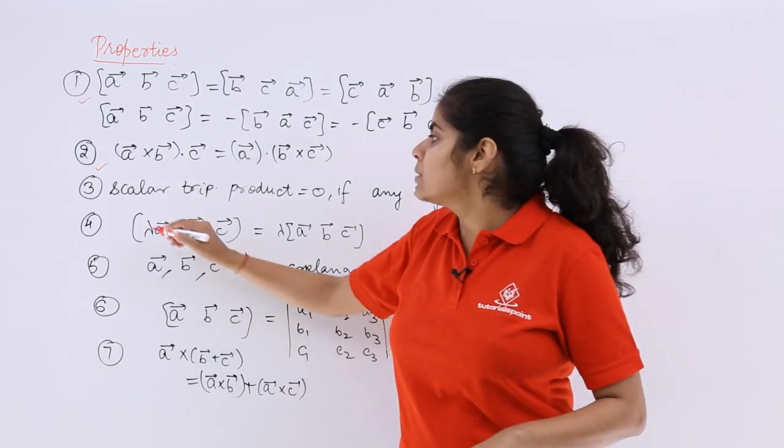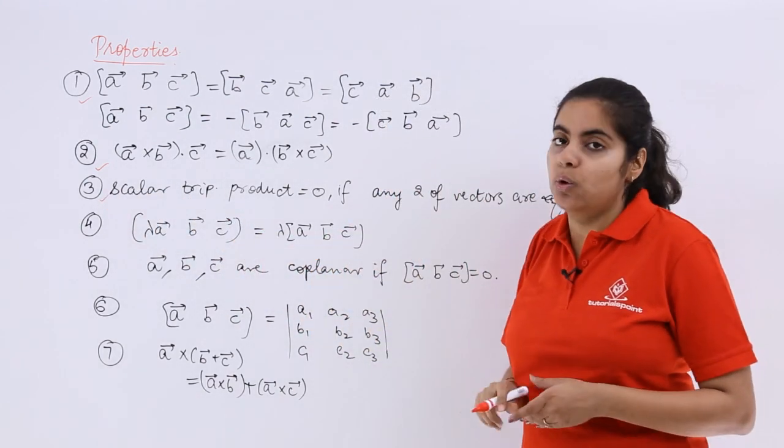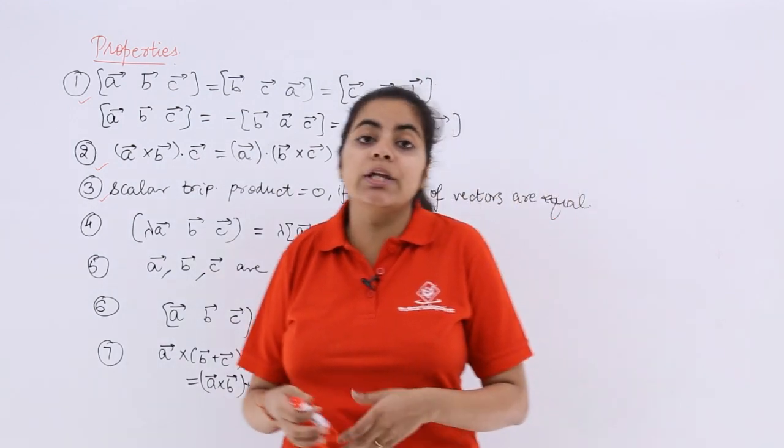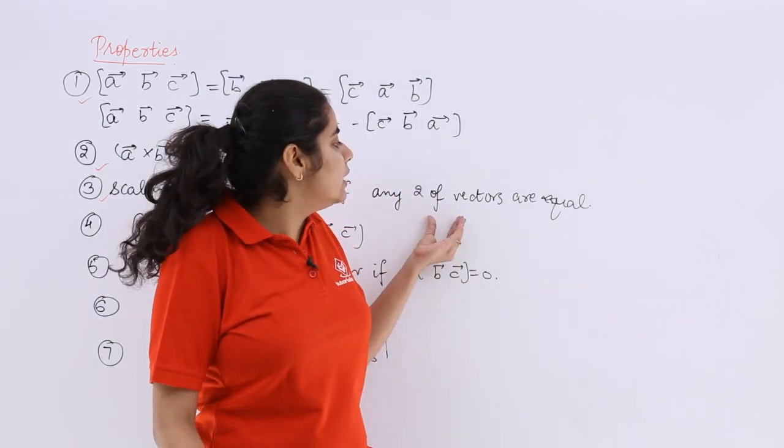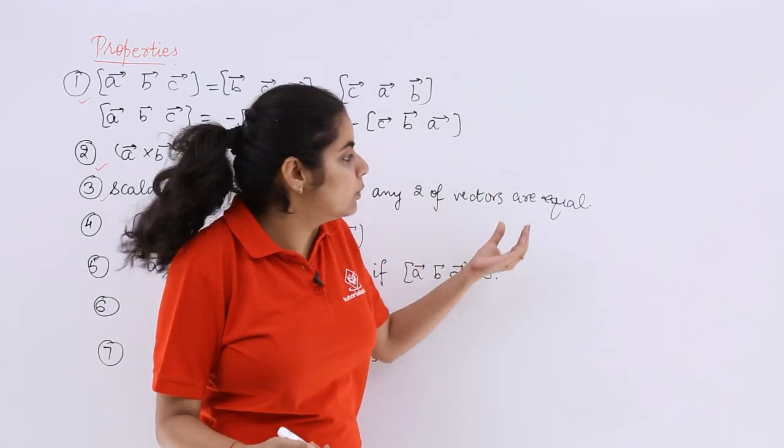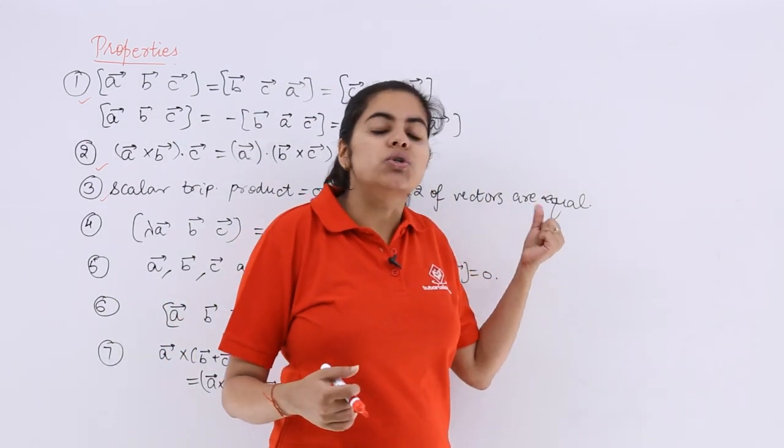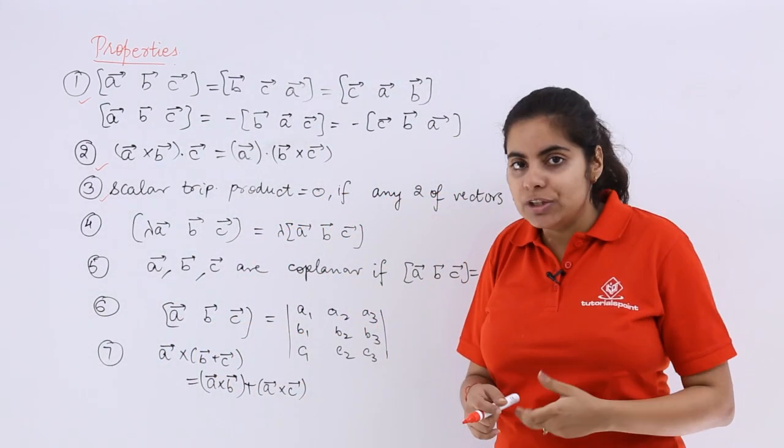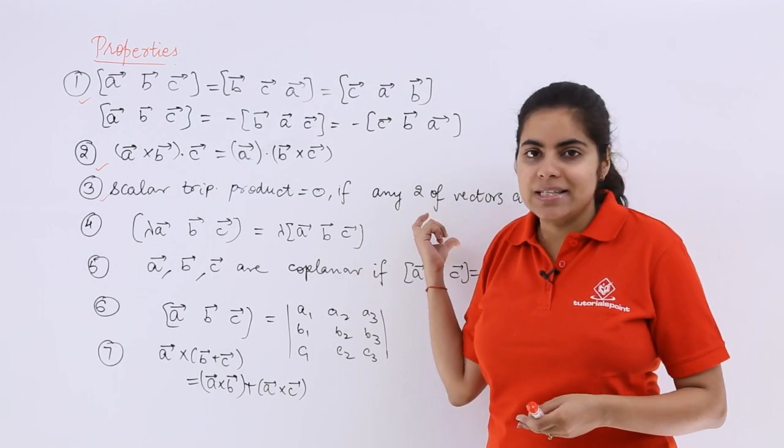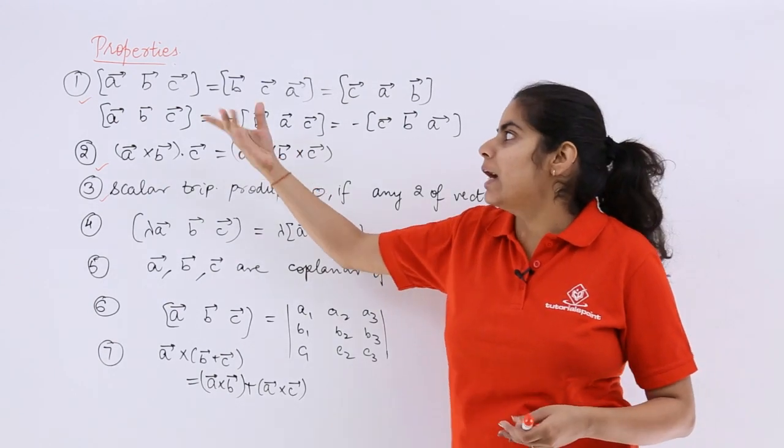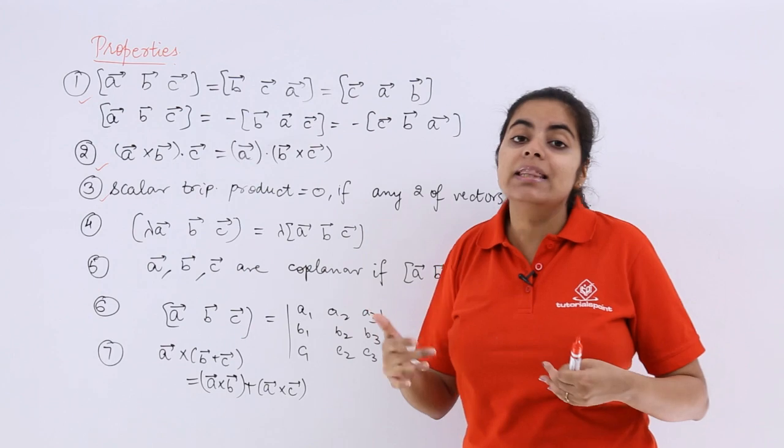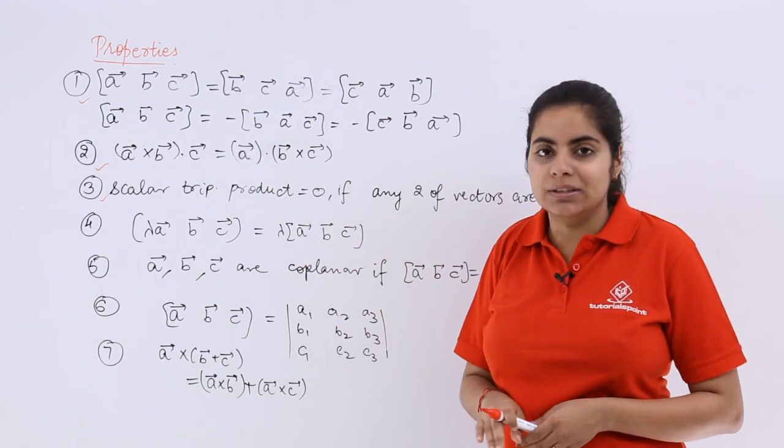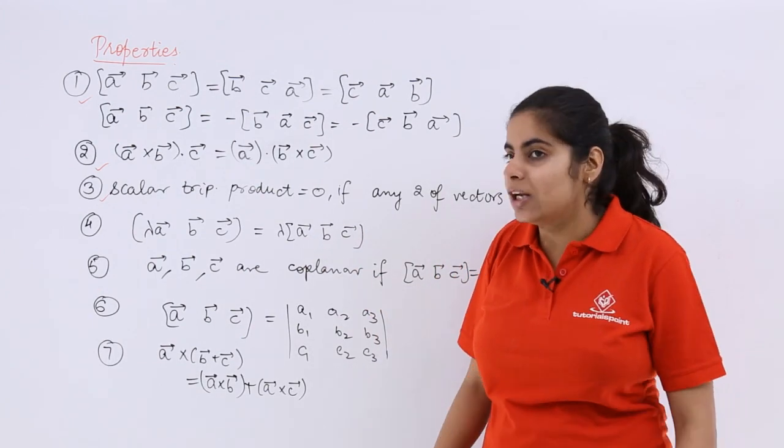The next property is about when the scalar triple product is zero. So if you have been given scalar triple product is zero, what can you conclude about the vectors? That any of the two vectors are equal, and I will suggest you please go and prove it yourself. Take any two vectors as equal. Take A, B, C where two are equal. You will get the scalar triple product as zero. So this is a proof and homework for you.